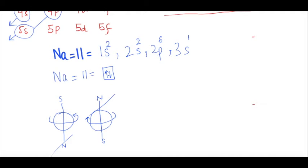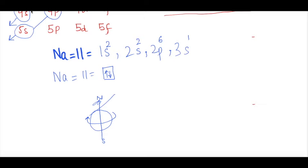Both electrons have negative charge, so how can two electrons reside in a single orbital? Because electrons are spinning in opposite directions. This rule is Pauli's exclusion principle. You don't need to remember the name of the scientist, but remember the rule: in an orbital, two electrons must have opposite spin.